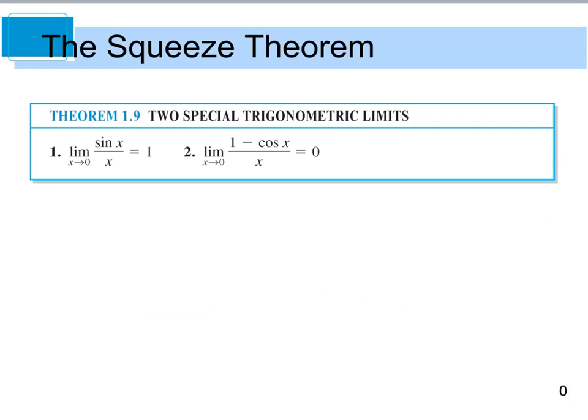From this, we have two special trig limits that you will have to remember. If you go to do direct substitution, you're going to see that you get 0 over 0 in both cases, so you need to memorize these two special cases. The limit as x approaches 0 of sine x divided by x is equal to 1. And the limit as x approaches 0 of 1 minus the cosine of x divided by x is equal to 0.